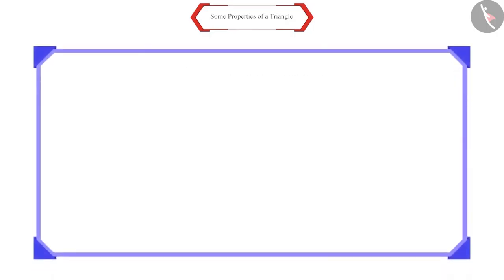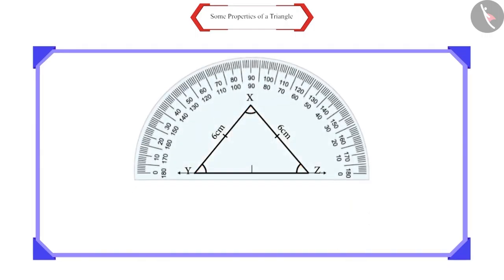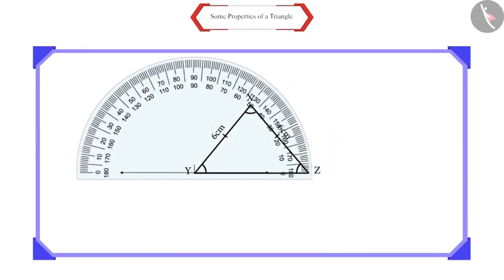Let us construct an isosceles triangle XYZ with sides XY and XZ equal to 6 cm. Friends, can we tell something about the angles of this triangle? With the help of a protractor, let's find the measure of all the angles of this triangle.